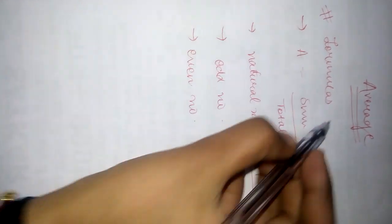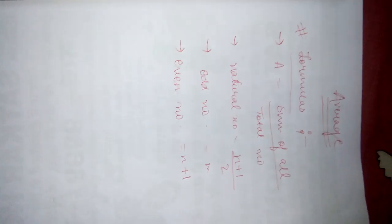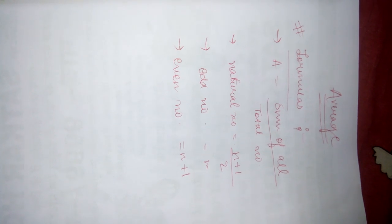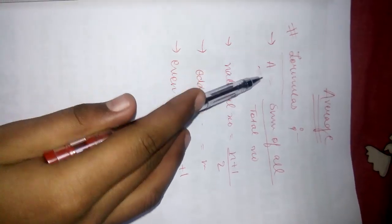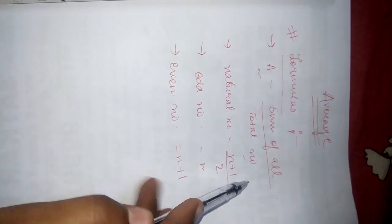Before starting that, I would help you to revise some formulas. That is of chapter Average. First formula is how do we calculate average? Average is equal to sum of all upon total number.